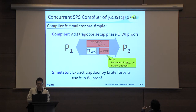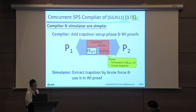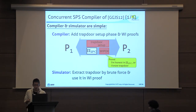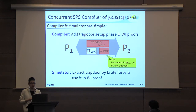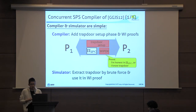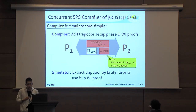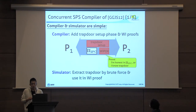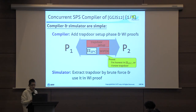The compiler of GGJS takes a standalone semi-honest two-party computation protocol and compiles it by adding a trapdoor-setup phase and a witness indistinguishable proof of knowledge, in which each party proves that they behave honestly in the two-party computation part, or that they know the trapdoor set up in the trapdoor-setup phase. The simulator of GGJS works by extracting the trapdoor by brute force from the trapdoor-setup phase and giving the WI proof using the trapdoor so that it can simulate the two-party part.